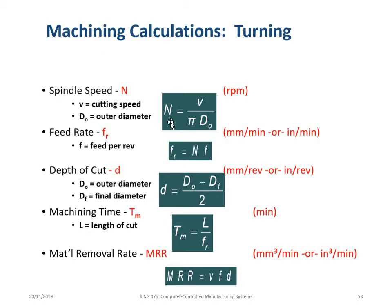Spindle speed N is the number of revolutions per minute. It can be calculated by dividing cutting speed V by πD, where D is the outer diameter of the workpiece. Feed rate can be determined by multiplying the number of revolutions N with given feed f.